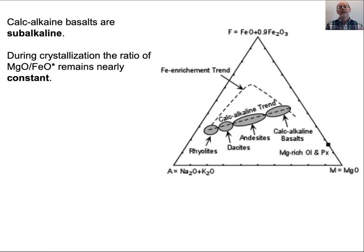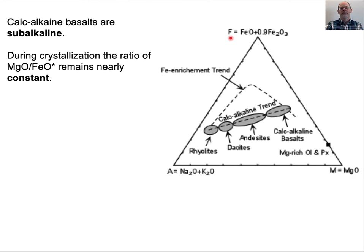I'd like to talk about chemical trends, and one of the most important are trends on what is called an AFM diagram. There's a metamorphic AFM diagram and an igneous AFM diagram — this is an igneous AFM diagram. A is sodium plus potassium, M is MgO, and F is a combination of FeO plus 0.9 times Fe₂O₃, all in weight percent.